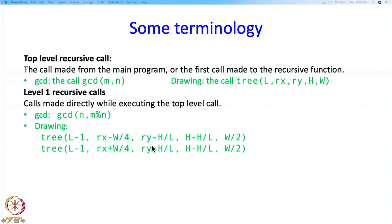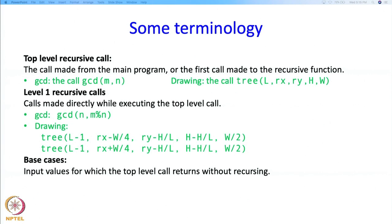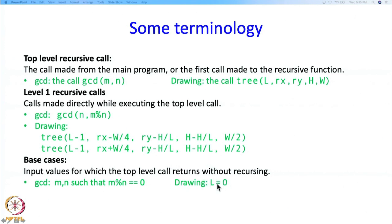This is just notation — I could define level-2 recursive calls similarly, but the whole point is that we can think about just one level of recursion to understand what is going on. There is also the notion of a base case: these are input values for which the top-level call returns without recursing. For GCD, if M is divisible by N, that is a base case — you return N directly. For drawing, if L equals 0, you return without doing anything; L equal to 0 is the base case.